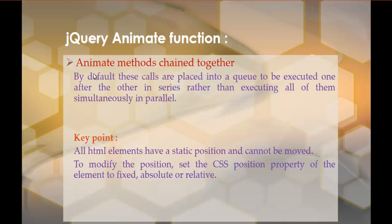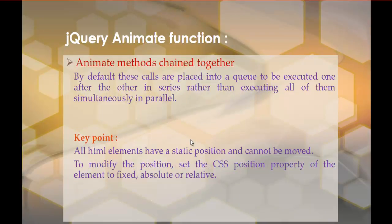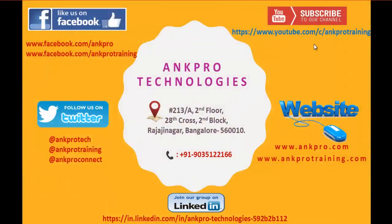By default, these calls are placed into a queue to be executed one by one in series, rather than executing all of them simultaneously in parallel. Each animate method executes one after the other. If you want to animate multiple chained methods, the HTML element's position must be set to fixed, absolute, or relative — otherwise animations will not work. In this session we learned the two parameters easing and complete, and how to chain multiple animate methods. Thank you for listening. Please subscribe to our YouTube channel and like our Facebook page. Have a great day.